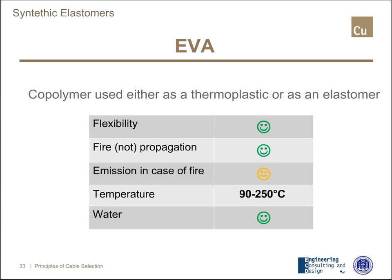EVA — ethylene vinyl acetate. Flexibility is good. Fire propagation: good. Unfortunately, emission in case of fire is not so good; again, we have to consider additives. Temperature is good, 90 to 150°C, and EVA in case of water is still good.